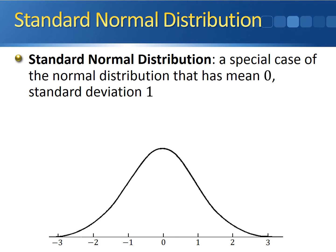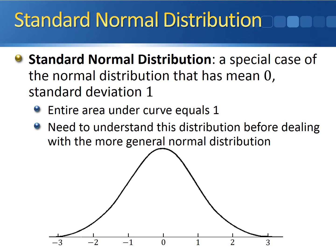This brings us to the standard normal distribution. The standard normal distribution is a special case of the normal distribution that has a mean of zero and a standard deviation of one. The curve is centered at zero; one standard deviation from the mean is negative one and positive one, two standard deviations is negative two and positive two, three standard deviations is negative three and positive three. The total area under this curve is equal to one, which is a really important point because it allows us to interpret areas as probabilities. Since probabilities must add up to one, areas and probabilities are identical. We need to understand this distribution before dealing with the more general normal distribution.